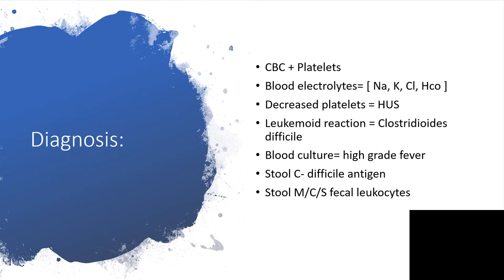The diagnosis is mostly clinical, but you can do a complete blood count with platelets. The platelets component is to rule out hemolytic-uremic syndrome. A leukemoid reaction is possible with Clostridioides difficile, formerly known as Clostridium difficile. Have blood electrolytes — particularly sodium, potassium, chlorine, and bicarbonate. You can have blood culture, particularly if the individual is having high-grade fever, and stool Clostridioides difficile antigen.